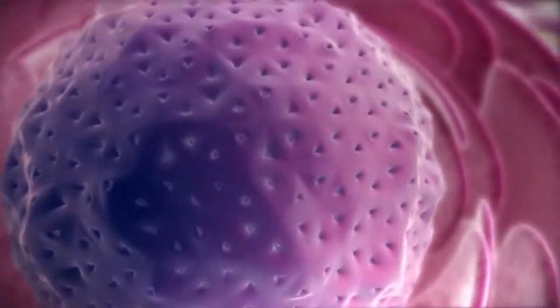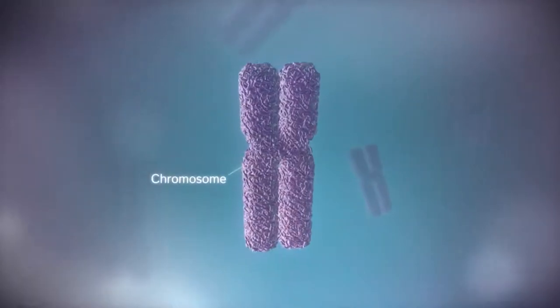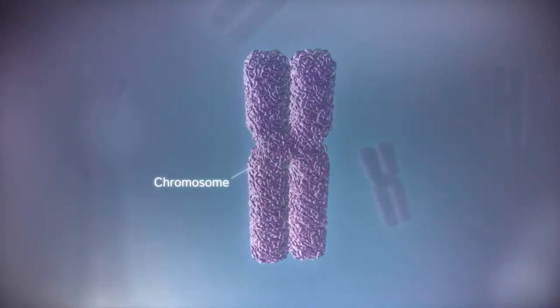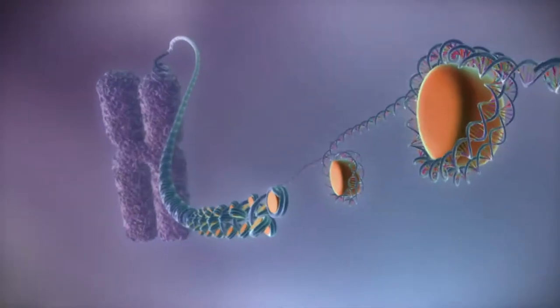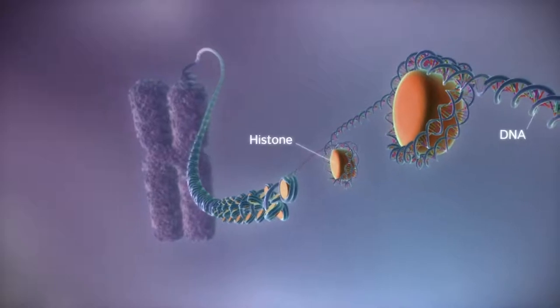In humans the genome is split between 23 pairs of chromosomes. Each chromosome contains a long strand of DNA, tightly packaged around proteins called histones.